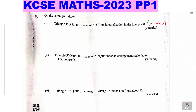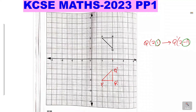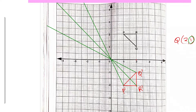Part two: draw triangle P''Q''R'', the image of triangle P'Q'R' under an enlargement with scale factor -1.5 and center O, the origin. So we enlarge what we have just drawn through center origin with scale factor -1.5. The first step in enlarging is to join all the object points to the center of enlargement using straight lines — join P' to the origin, then Q', then R'.